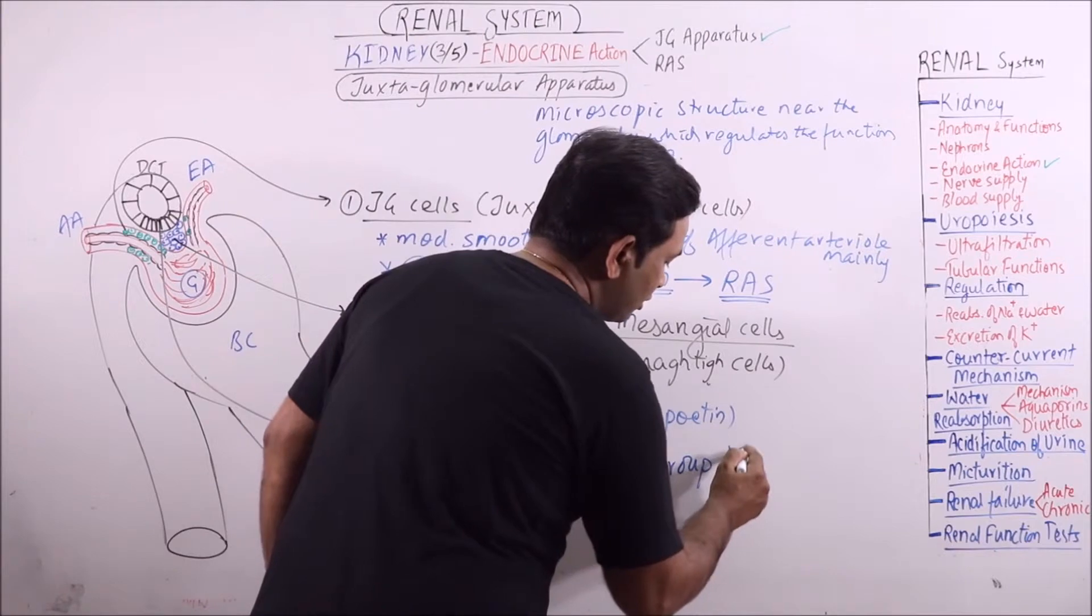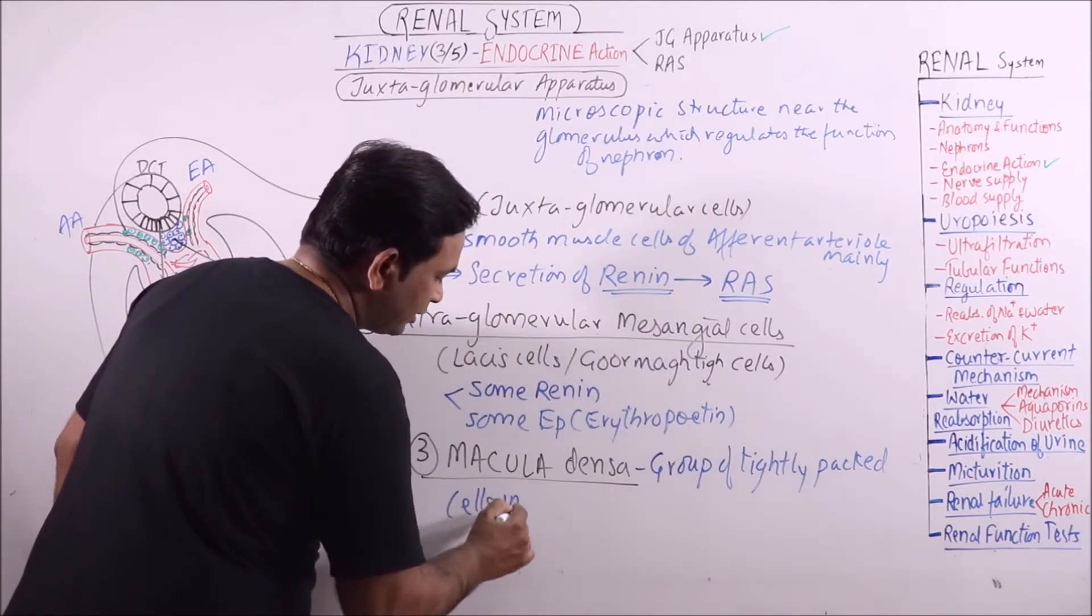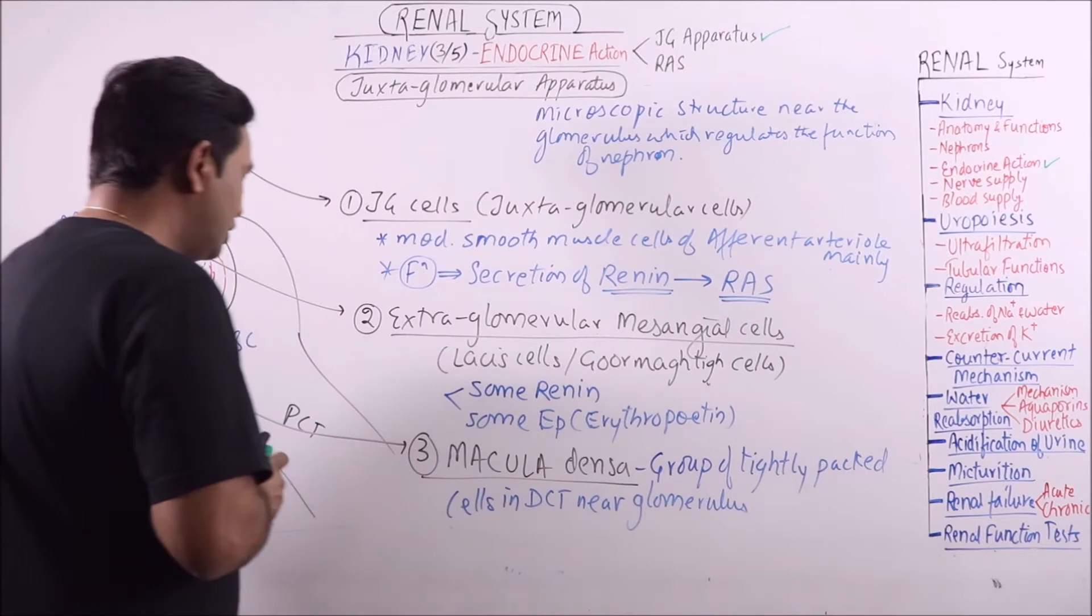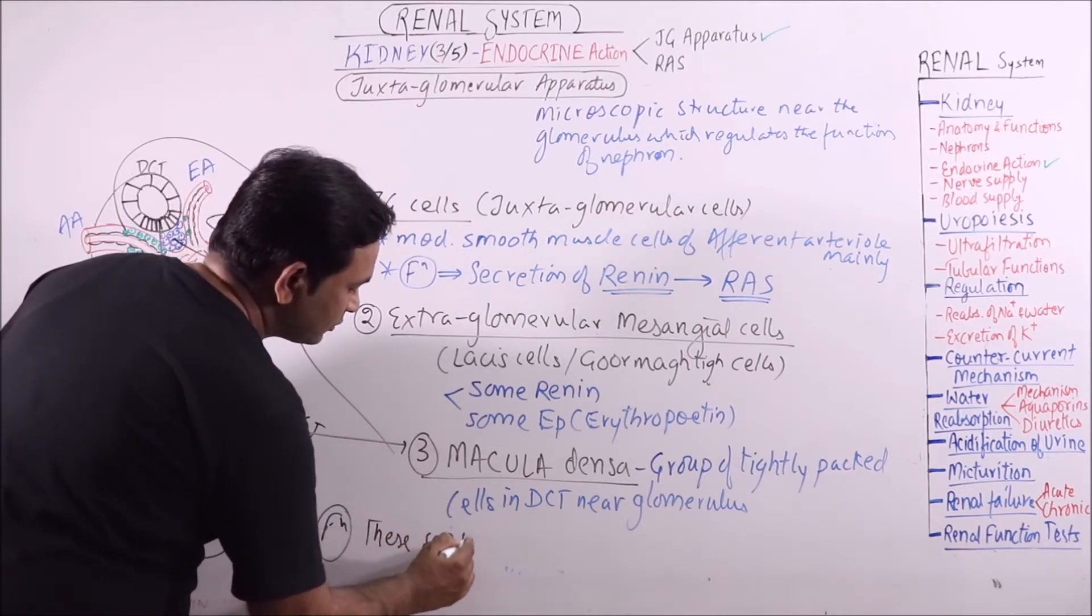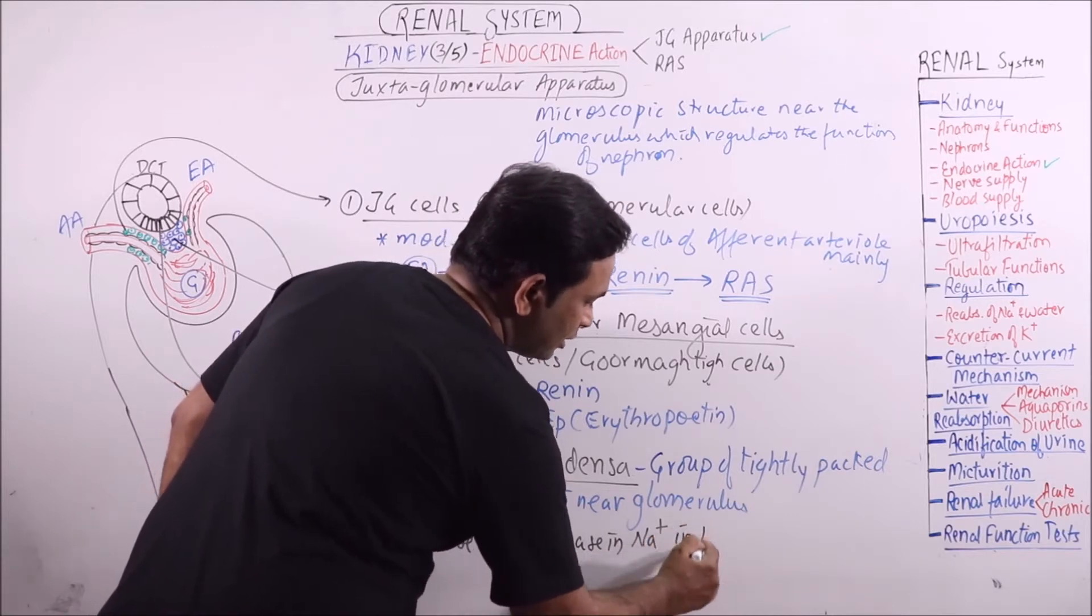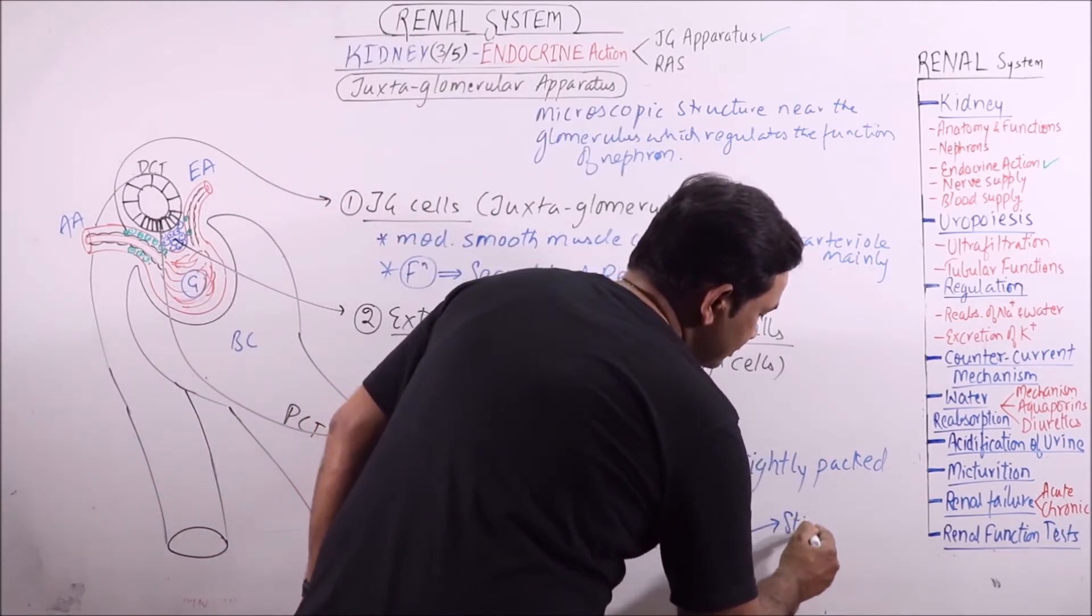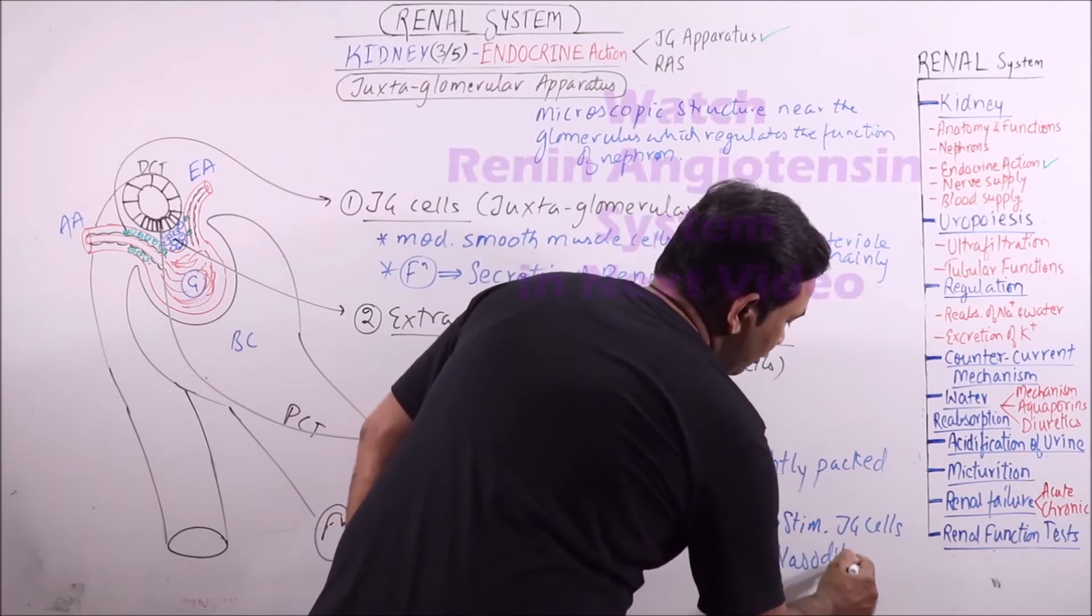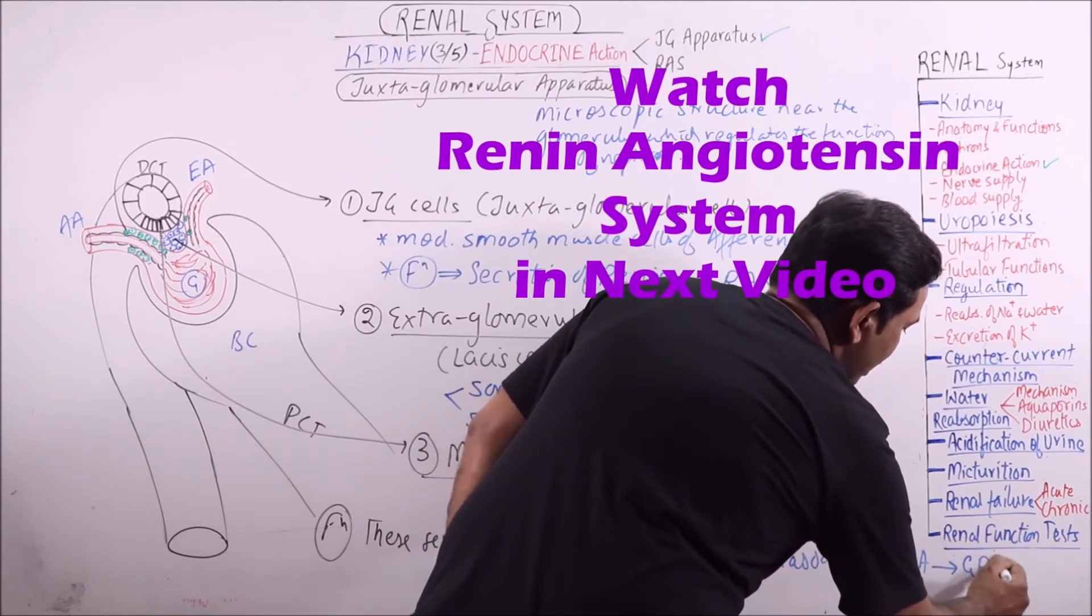What is macula densa? It is a group of tightly packed cells in DCT near glomerulus. Now what is the function of this macula densa? Function is that these sense the decrease in sodium concentration in nephric filtrate. After which these stimulate JG cells to release renin and also these result in vasodilation of afferent arteriole. Because of which GFR increases.